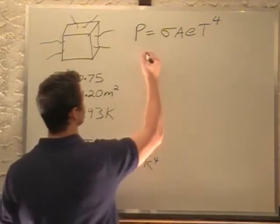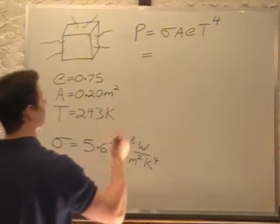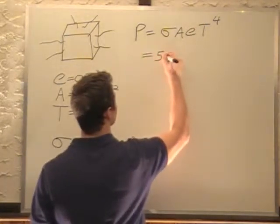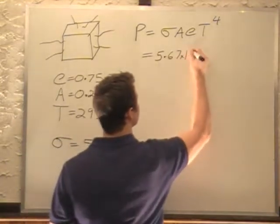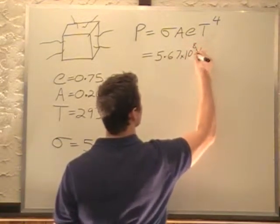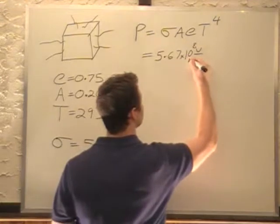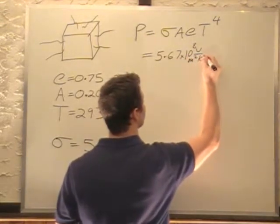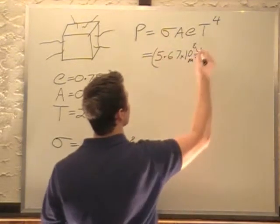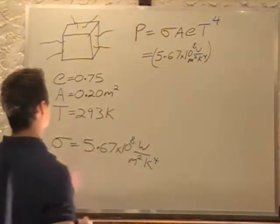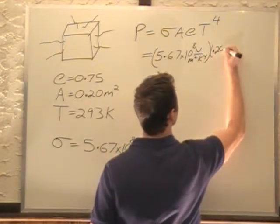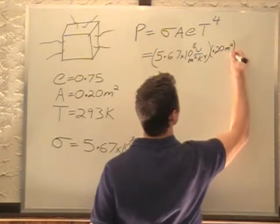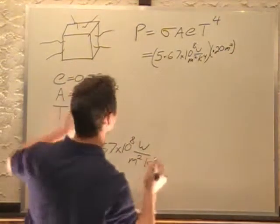So all we have to do is plug in our values to figure out the power radiated. Sigma, 5.67 times 10 to the negative eighth watts per meter squared Kelvin to the fourth. Area of 0.20 meters squared. E of 0.75.